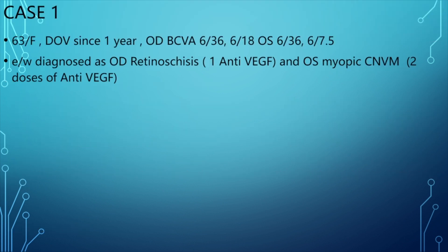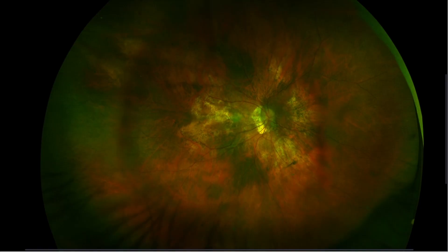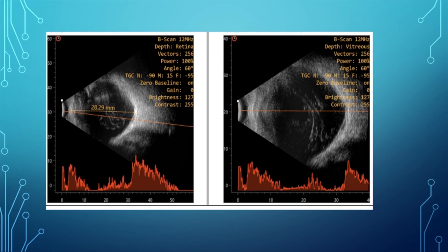A 63-year-old lady presented with diminution of vision for one year. BCVA was 6/36 in both eyes. She had been diagnosed with right eye retinoschisis and given one dose of anti-VEGF elsewhere, and left eye myopic CNVM treated with two doses of anti-VEGF. Fundus of the right eye showed posterior staphyloma with dense choroidal atrophy in the macular region and schisis involving the fovea. B-scan showed a subtle excavation suggestive of posterior staphyloma and a highly reflective membrane from the optic nerve head toward the macula, suggestive of macular detachment.